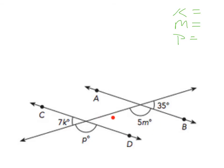The first thing I notice is right here, this forms 180 degrees. So this angle plus this angle equals 180. So we would say 5m plus 35 is going to equal 180, which would be 5m equals 180 minus 35, which is 145. If we divide both sides by 5, m is 29. So right away we know m is going to be 29.